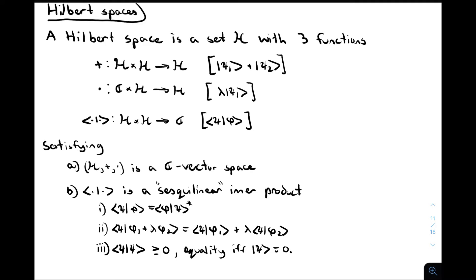If you don't understand what antilinear means, just hold on because we'll cover antilinear operators in a few slides. The third important axiom is that if I take the inner product of a vector with itself, I will always get a real number greater than or equal to zero. You can show it's always real just from the first axiom, and you will only get zero for the zero vector, which is guaranteed to exist by the axioms of the vector space.